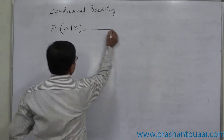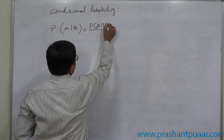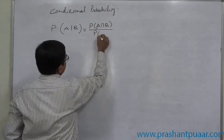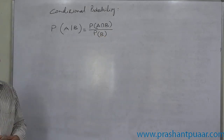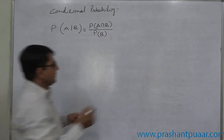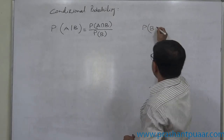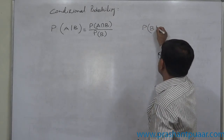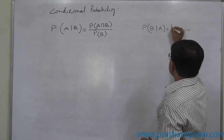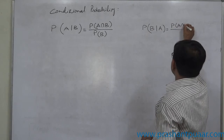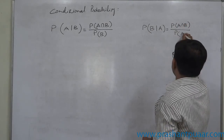What is the formula? It is the ratio of the probability of intersection to the probability of B. In the same way, we can say that the probability of happening of B subject to the condition that A has happened is P of A intersection B divided by P of A.